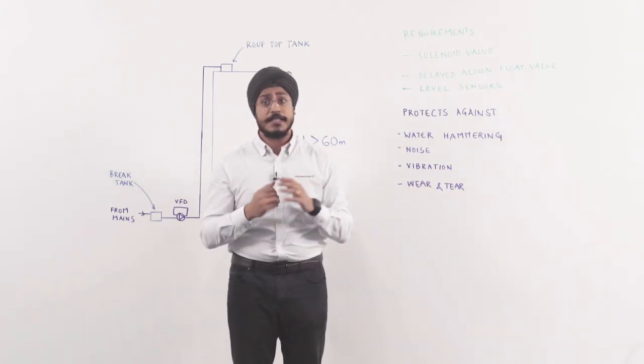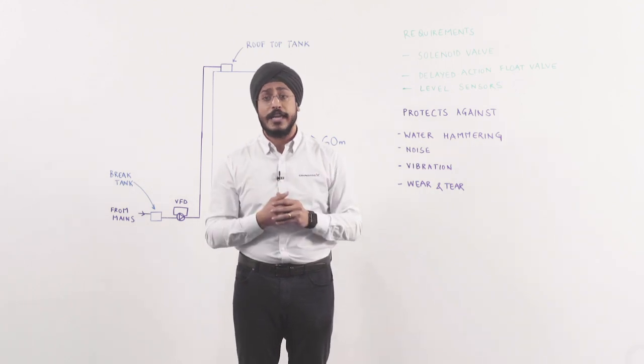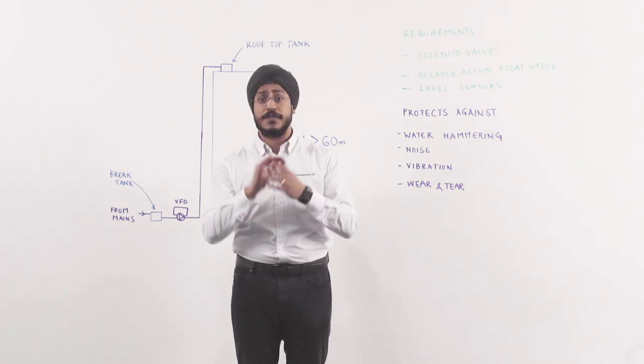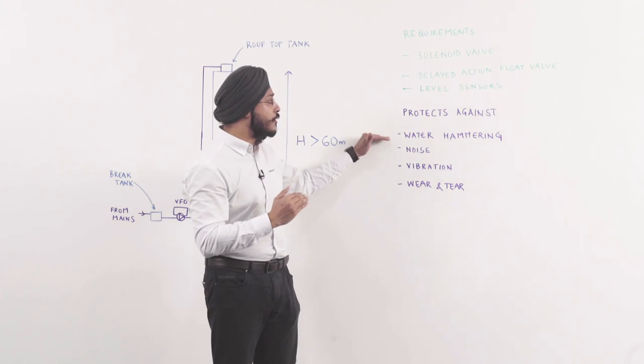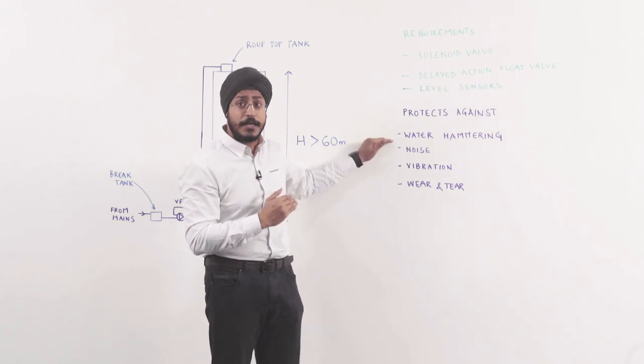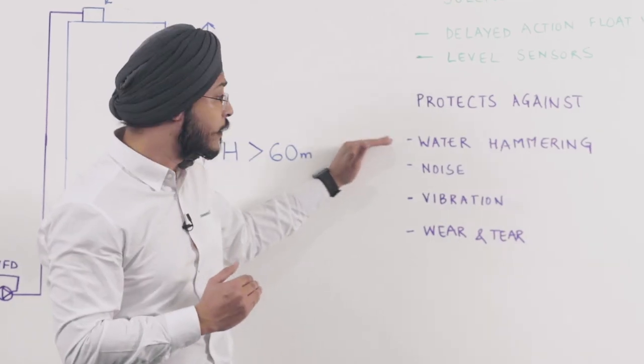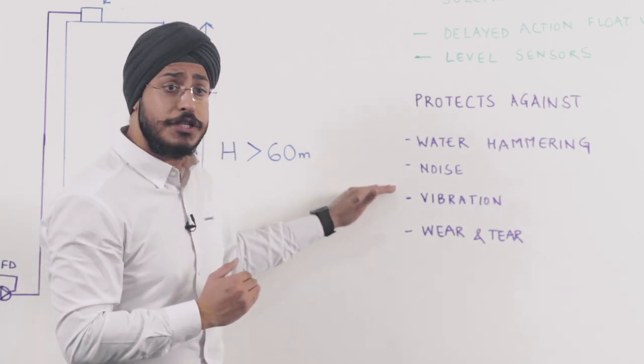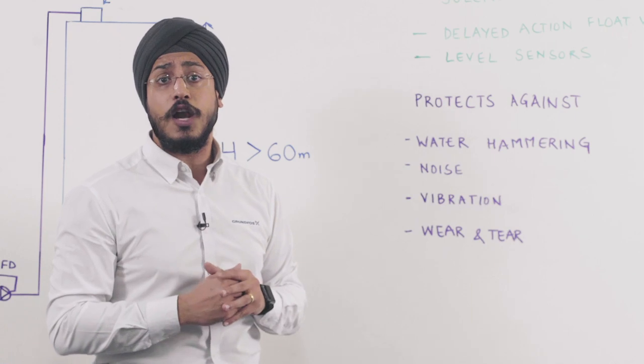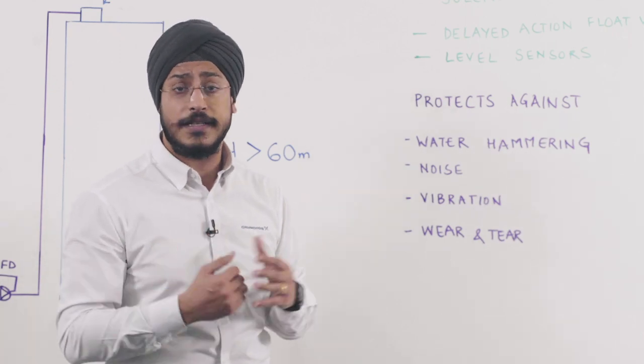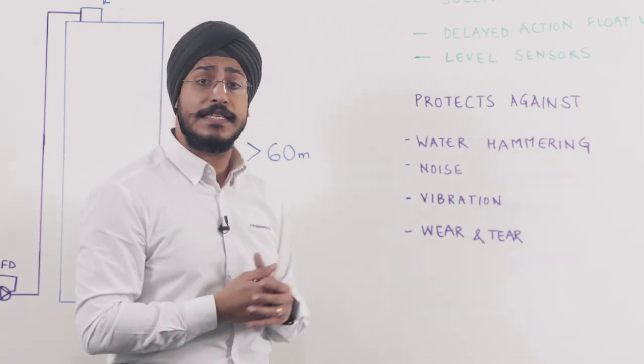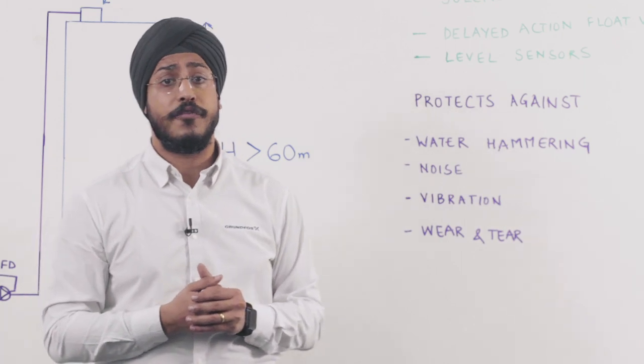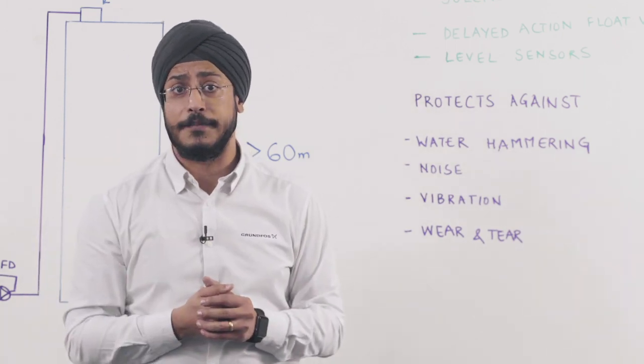Just to conclude, for any buildings above 60 meters, we recommend the use of variable speed water transfer systems as they help in reducing and protecting the system against water hammering, noise from the flow of water in the pipes, vibrations that actually cause a lot of damage to all the joints in the system, as well as the excessive wear and tear that comes from the sudden ramp up and sudden ramp down.